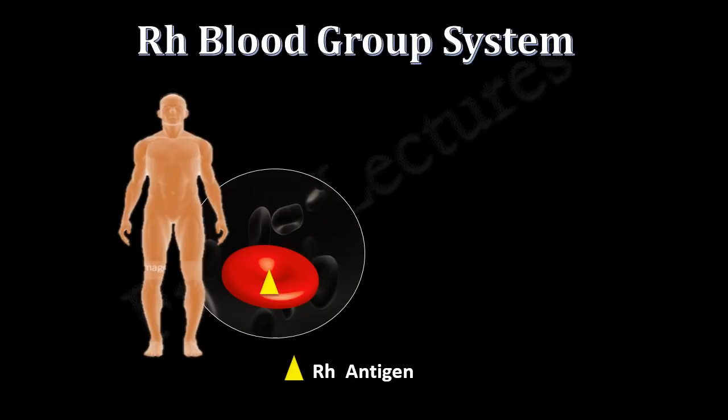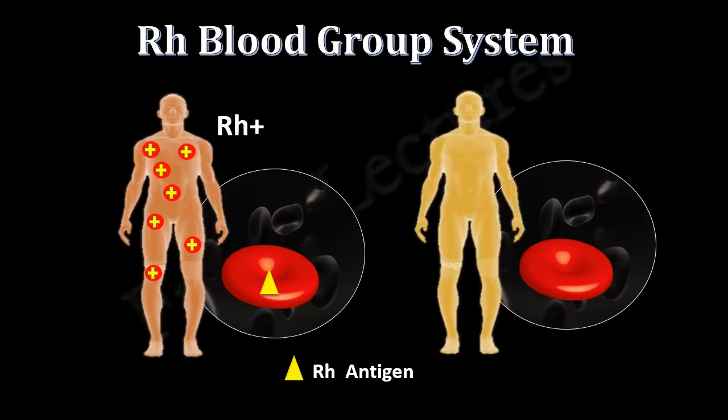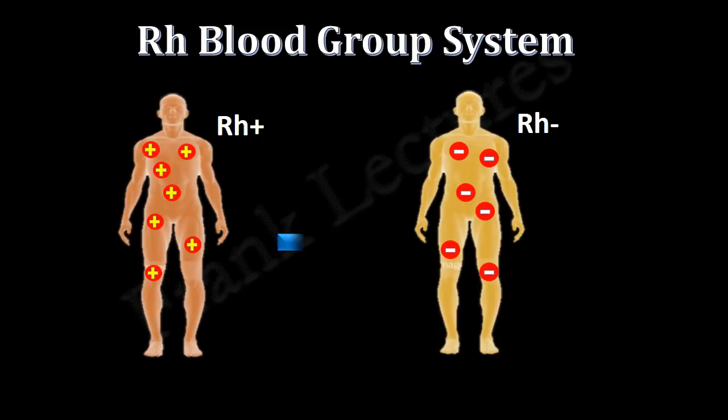We have studied the RH blood group system in our previous video lectures. We know that persons who have RH antigens on their RBCs are known as RH positive. Persons in which RH antigens are absent on their RBCs are known as RH negative. We also know that RH negative persons cannot receive blood from RH positive persons.